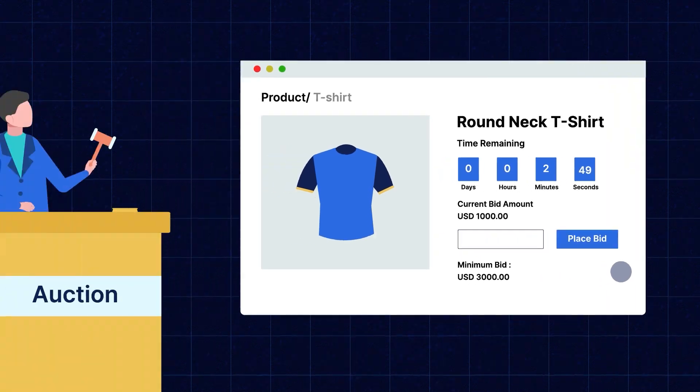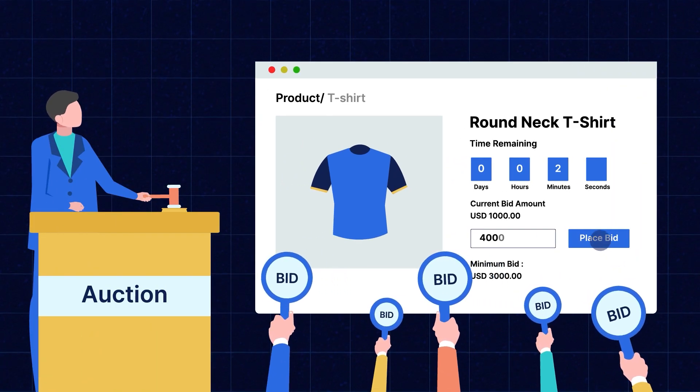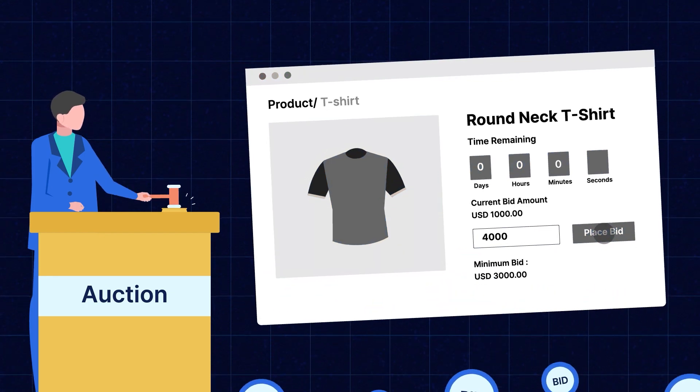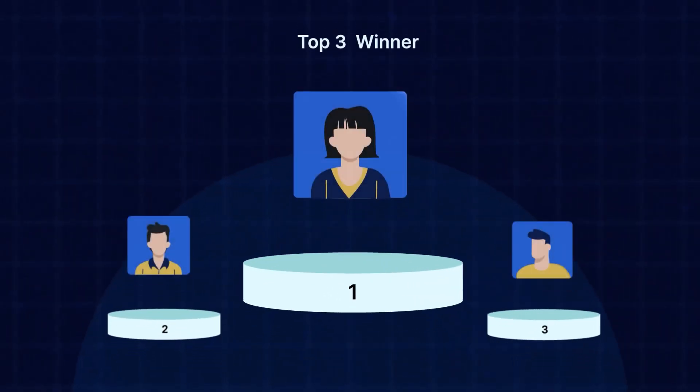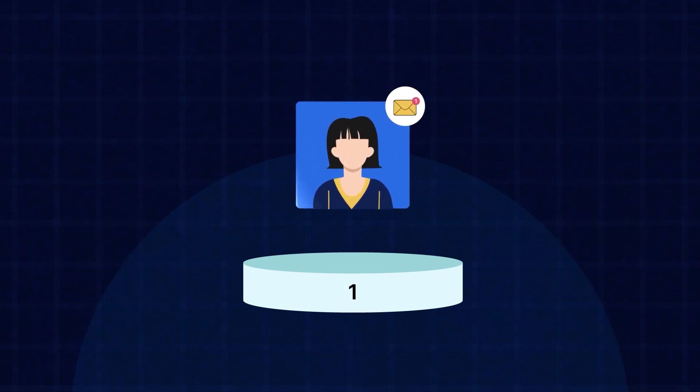Let's understand with an example of how it works. Suppose that I am a store owner and I want to sell a product at a higher price, so I'm going to use our new application, Product Auction. This application allows you to apply the auction on the product you want to sell. After applying the auction, registered customers can bid on the product. When the auction ends, the top 3 winners will be shown in the application. As the store owner, I have to select the winner and then notify them via email.